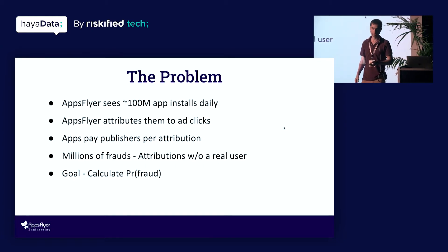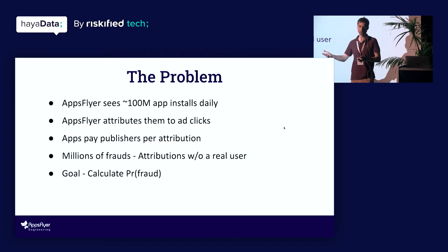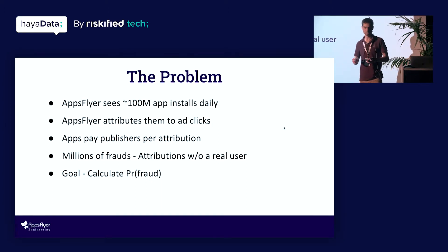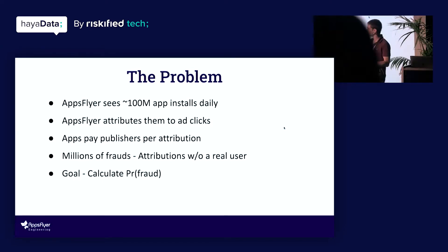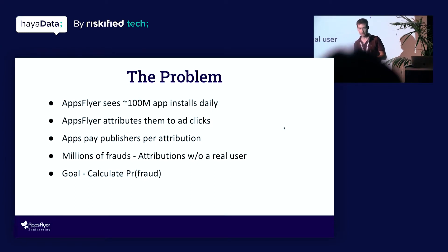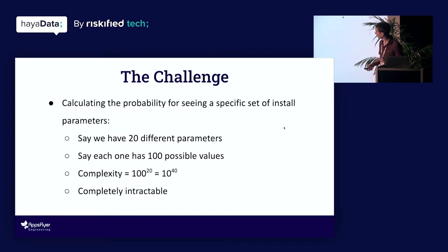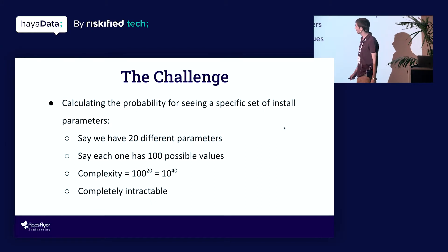Now there are some fraudsters out there. Fraudsters, essentially what they're going to try to do, for the sake of this talk anyway, is kind of bring users or bring attributions without real users behind them. Bring sort of fake installs with just some bot or script behind them and not a real user. And so they hope to gain the money from the attribution without really having to go through the trouble of bringing real users. So essentially, our goal is going to be let's try to calculate what's the probability for an install to be fraud. Given an install, how likely is that install to actually be fraud?